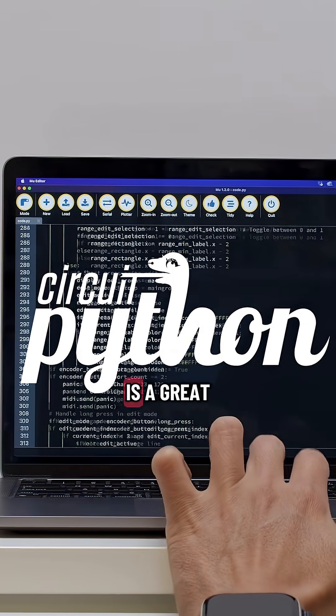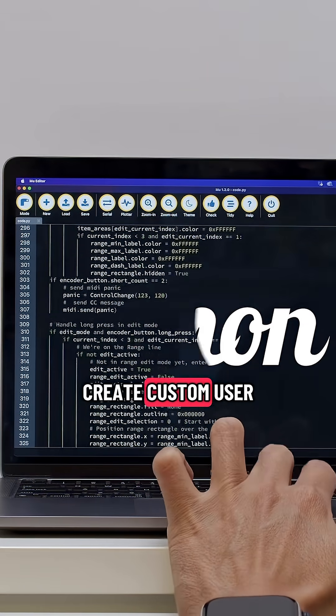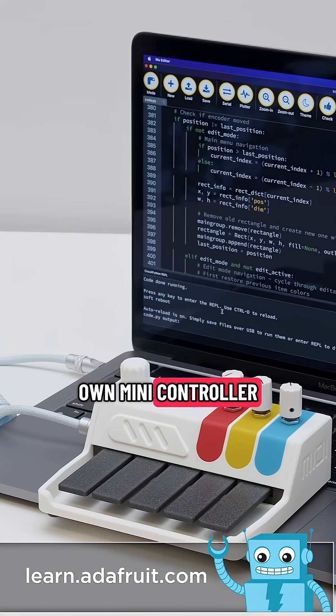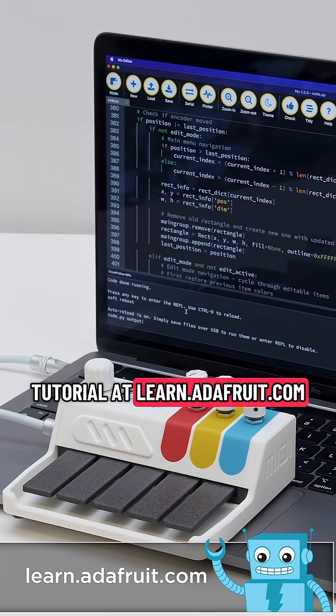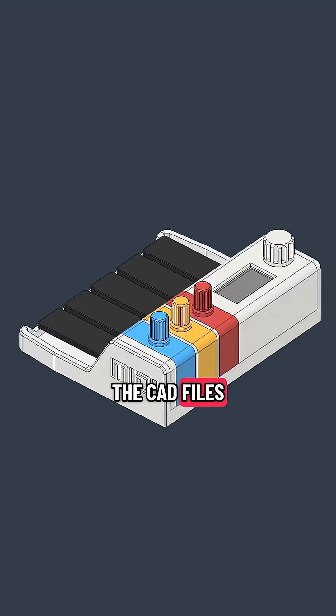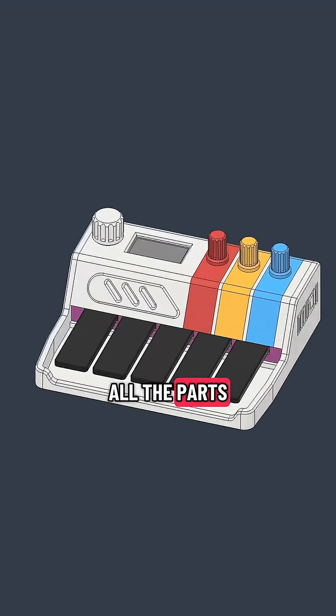The CircuitPython code is a great example of how you can create custom user interfaces using DisplayIO libraries. To learn how to build your own MIDI controller, check out the tutorial at learn.adafruit.com. The CAD files are free to download, and links to all the parts are in the description.